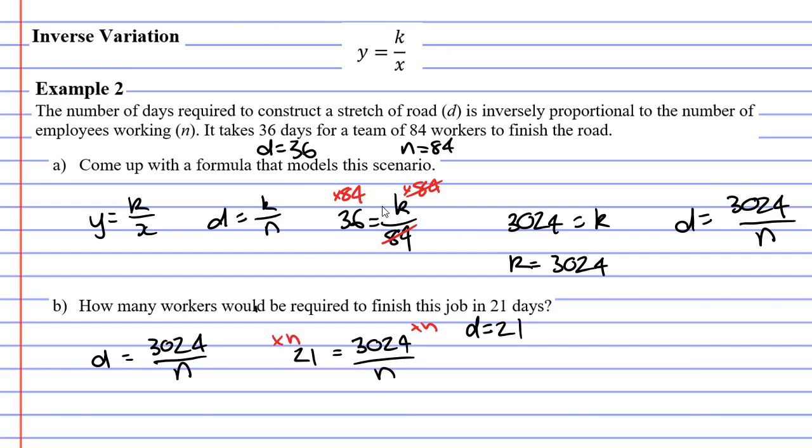We can substitute that into our formula 21 equals 3,024 over N. The first thing I'm going to do is multiply both sides by N, so that I can cancel out the N below 3,024. On the left, we get 21 times N, or 21N. On the right, we get 3,024, because the N's cancelled each other out.